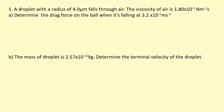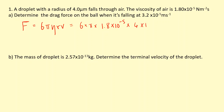A droplet with a radius of 4 micrometres falls through air with a viscosity of 1.8×10⁻⁵. Determine the drag force when it is falling at a speed of 3.2×10⁻⁵ metres per second. We simply use F_drag = 6π eta r v, which is 6 × π × 1.8×10⁻⁵ × 4×10⁻⁶ m × 3.2×10⁻⁵, giving 4.34×10⁻¹⁴ N.